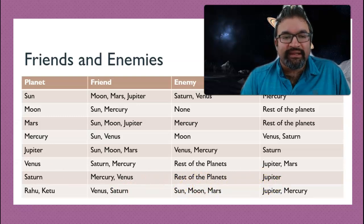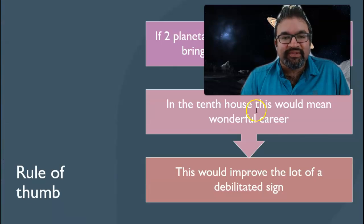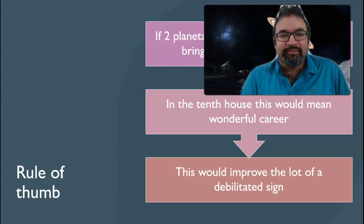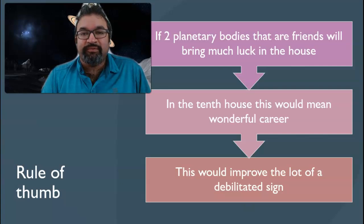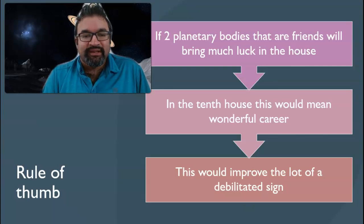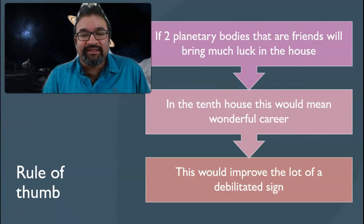So finally, if we look at some of the different understandings of how planetary bodies, friends, and enemies create obstacles or bring luck — including examples of transiting the 10th house or in the natal chart — when a planet is debilitated in the 10th house there are hardships, and when it's exalted it's better. These are all the elements to keep in mind. Thank you for listening.